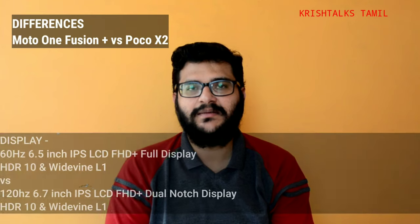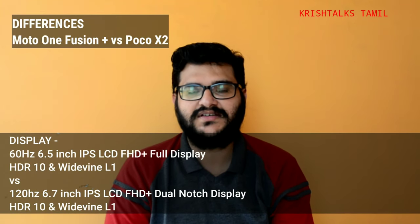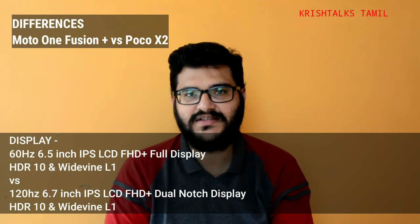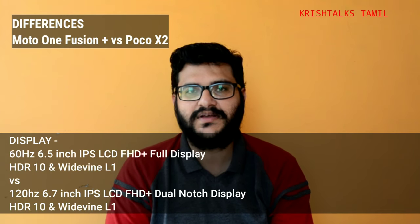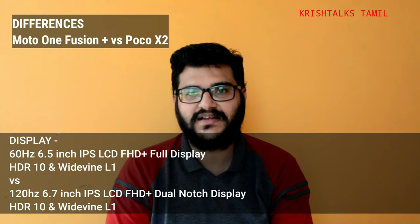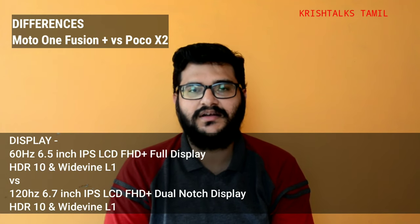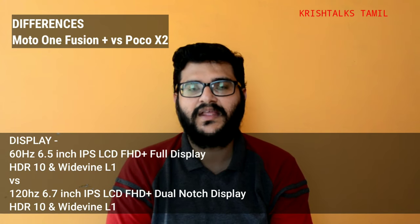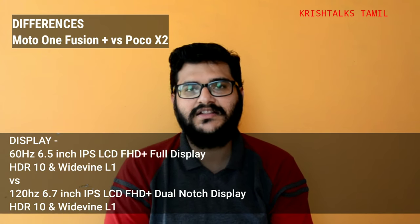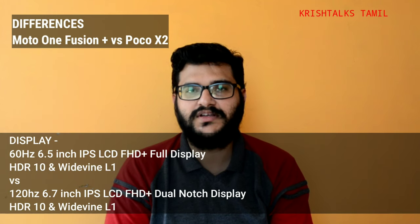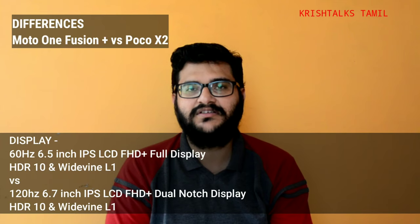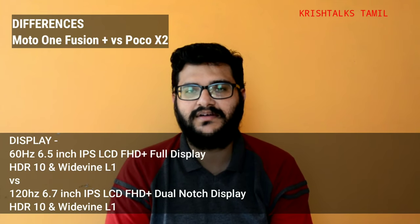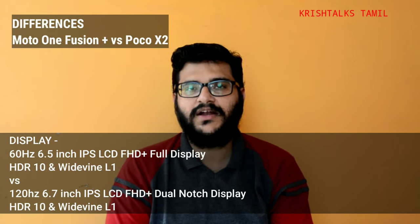Starting with the screen: the Moto uses a 6.5-inch IPS LCD Full HD Plus screen at 60Hz with a full display — no notch, giving a full-screen display experience. That is an advantage of the Moto. For POCO, it is also a Full HD Plus IPS LCD screen but at 120Hz, with a dual punch-hole cutout.